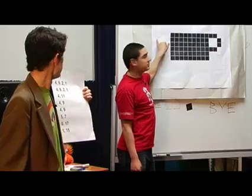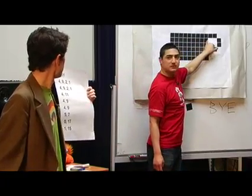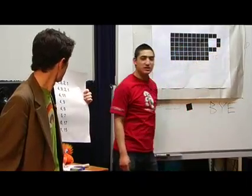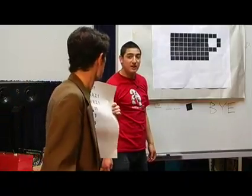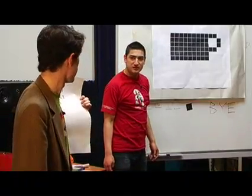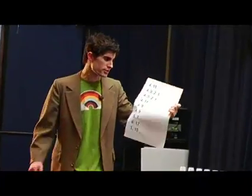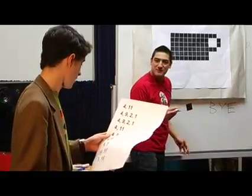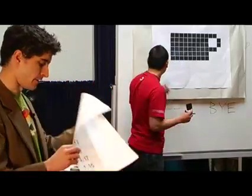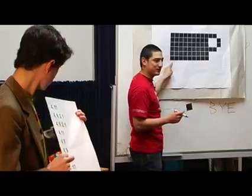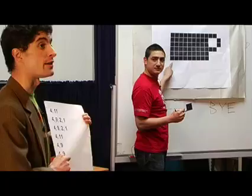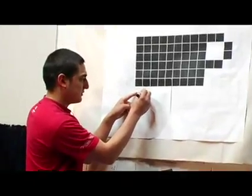We're going to have a go at decoding the last three rows of this picture. Harv, if you could switch on your printer, please. So we've got a 5 — that's 5 white pixels. Please print 5 white pixels. Then we've got a 7, which is 7 black pixels. 7 black pixels printed.